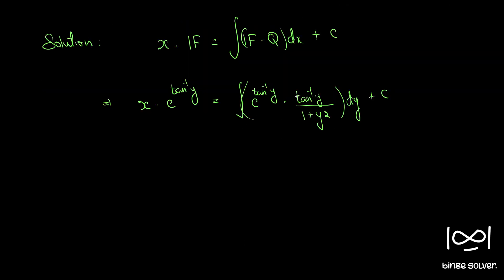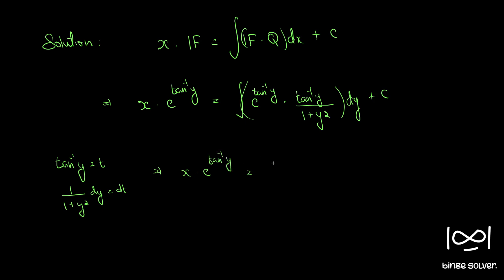Looking at this integral, we have tan⁻¹y, so we substitute t = tan⁻¹y. Differentiating both sides, 1/(1 + y²) dy = dt. Since we have 1/(1 + y²) dy in the integral, this simplifies to: x·e^(tan⁻¹y) = integral of e^t · t dt + c.